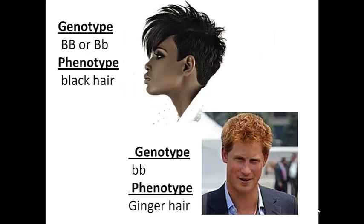So here we have genotype and phenotype. Genotype refers to the actual two alleles that a person has. The person with black hair can be big B, big B or big B, little b. Remember, big B stands for black hair because that's the colour you see when you have both alleles present. The phenotype is the actual expression of those genes and alleles — so this person has the black hair phenotype. The genotype little b, little b produces the phenotype of ginger hair. The big B is absent, and that's a requirement to see the recessive phenotype expressed in a person.